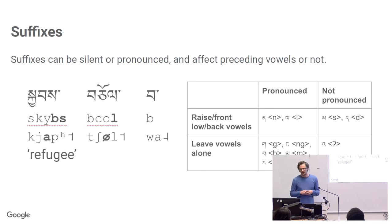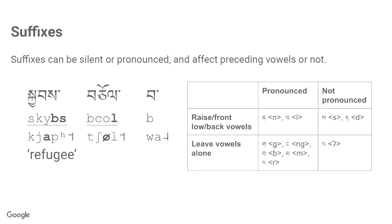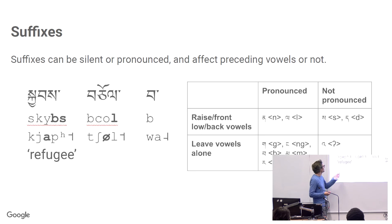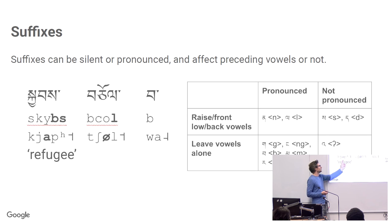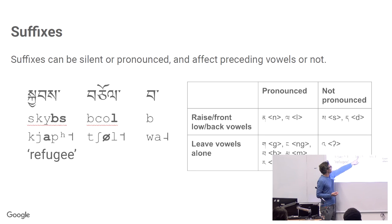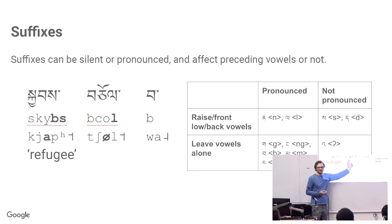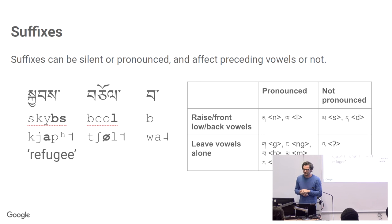Suffixes come in four types: they can be silent or pronounced, and they can affect the preceding vowel or not. For example, B as a suffix is pronounced and doesn't affect the preceding vowel. L as a suffix is pronounced but does affect the preceding vowel. Prefixes are typically not pronounced, but they can have effects on other sounds — for example, a prefix can de-aspirate the initial consonant, or a G prefix is not pronounced but raises the tone on the vowel in the following syllable.